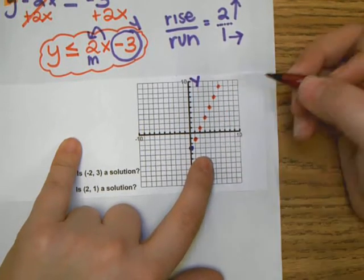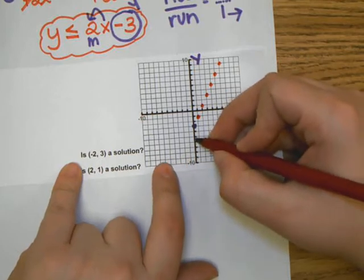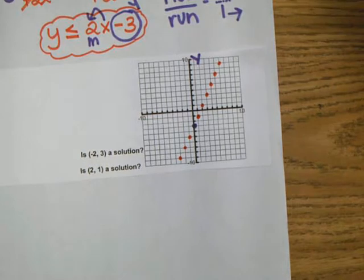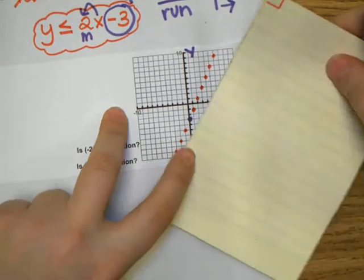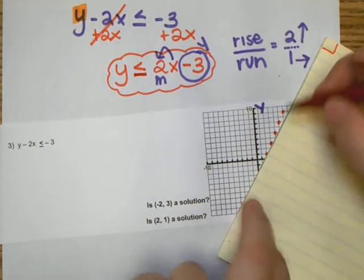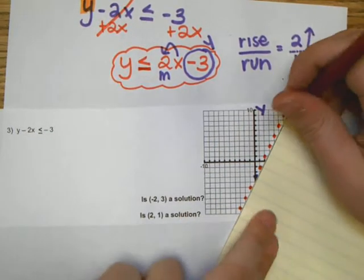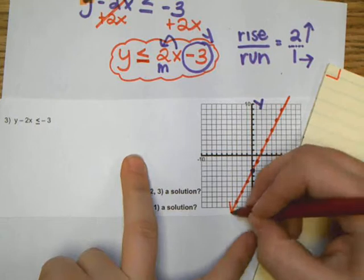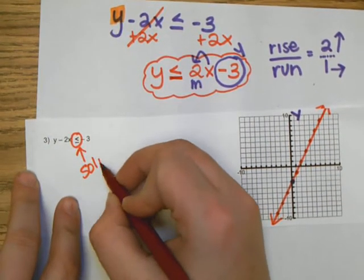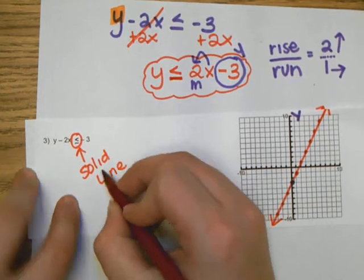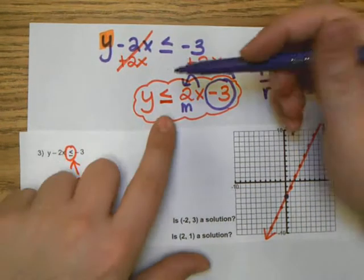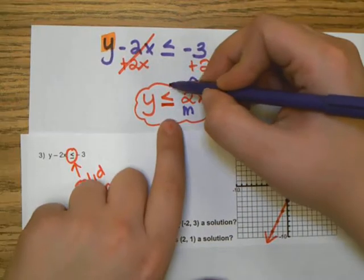From negative 3, we go up 2 and right 1 repeatedly to plot points. We can also go down 2 and left 1 for more points below. When we connect the points, because the inequality has the line underneath, we use a solid line.